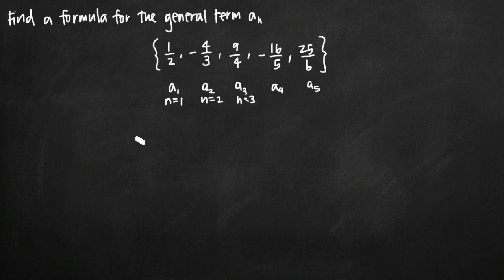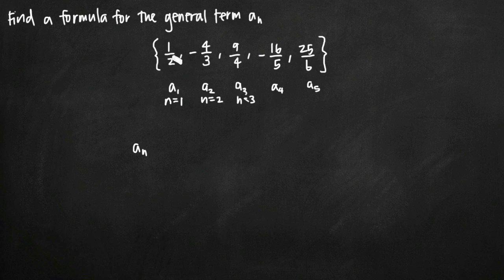When it comes to writing the a sub n-th term, you want to break down your sequence into pieces. In this particular sequence, we've got rational terms, so I'm going to deal with the numerator separately from the denominator — each one is a separate piece. We've also got some alternating positive and negative signs, so we'll have to deal with that too. That's three separate things we can handle on their own instead of trying to figure out the pattern for each one all at once.